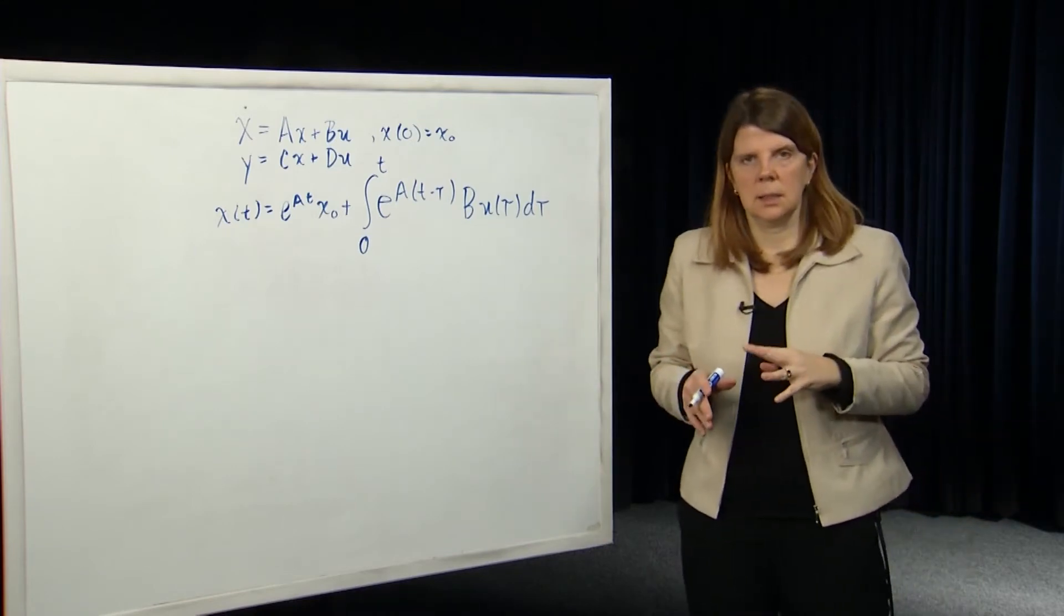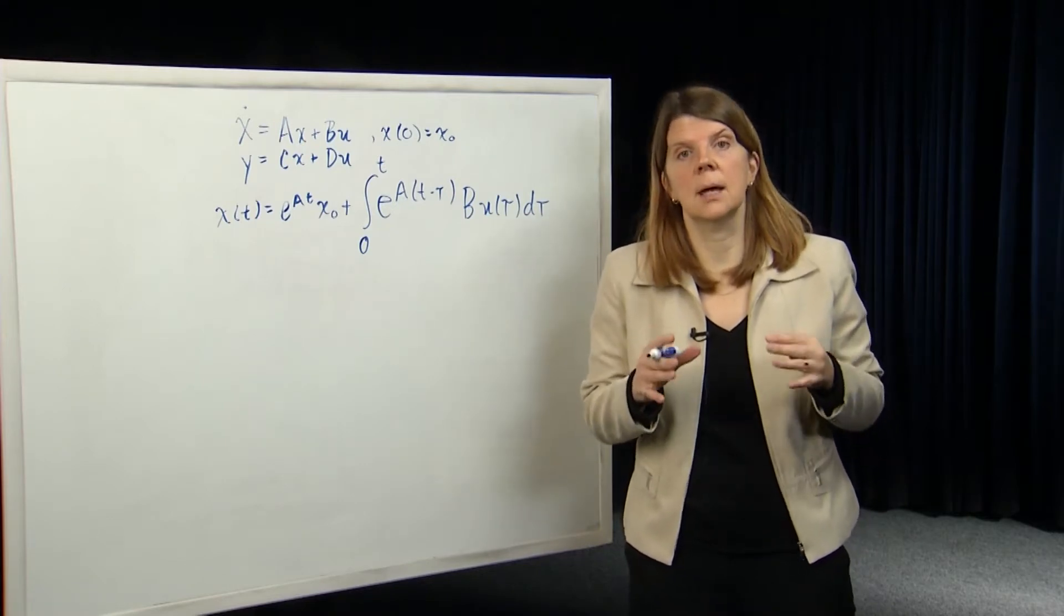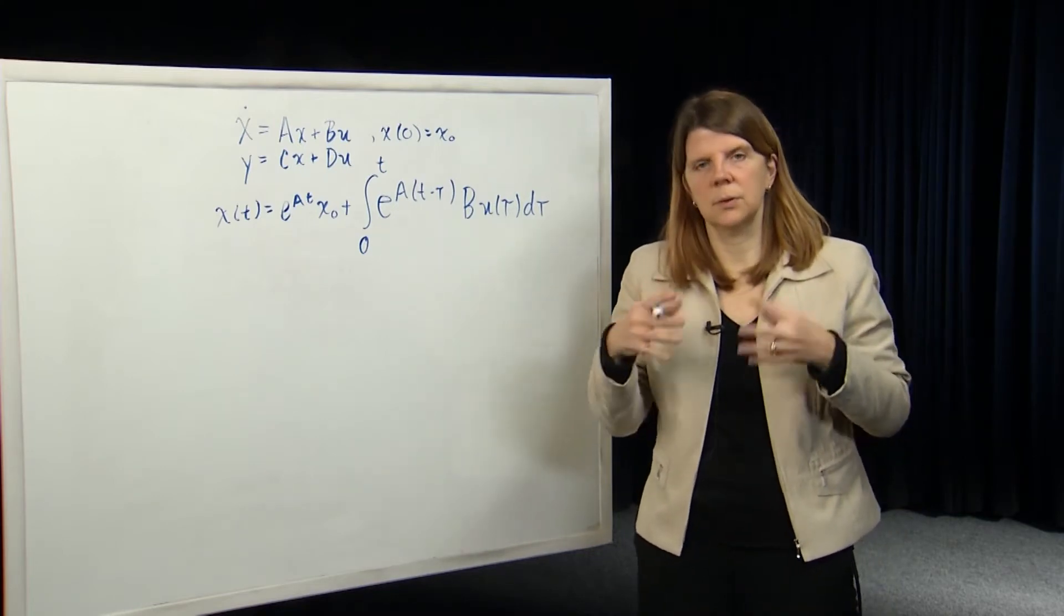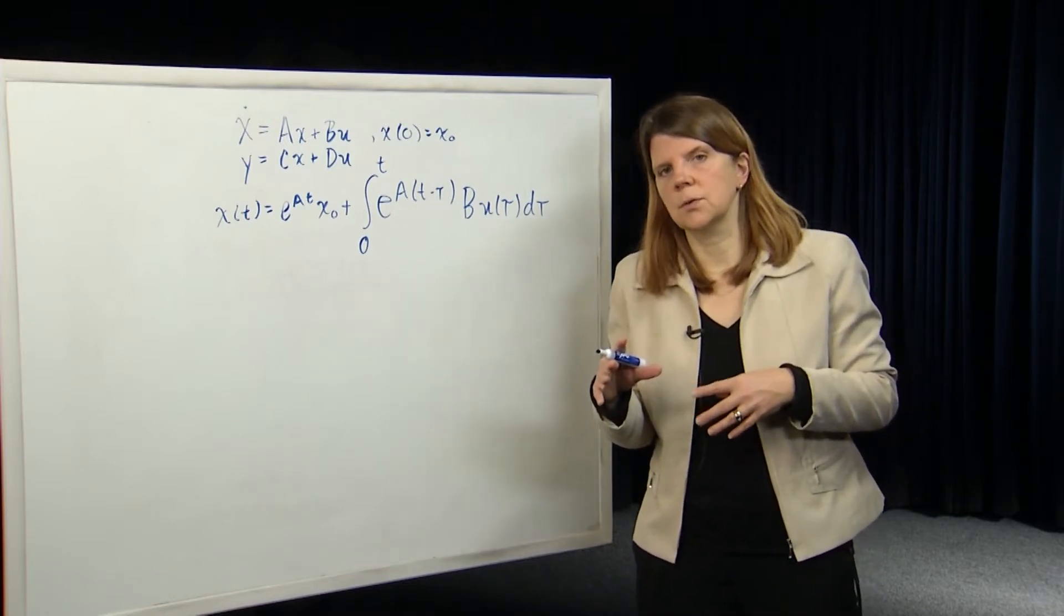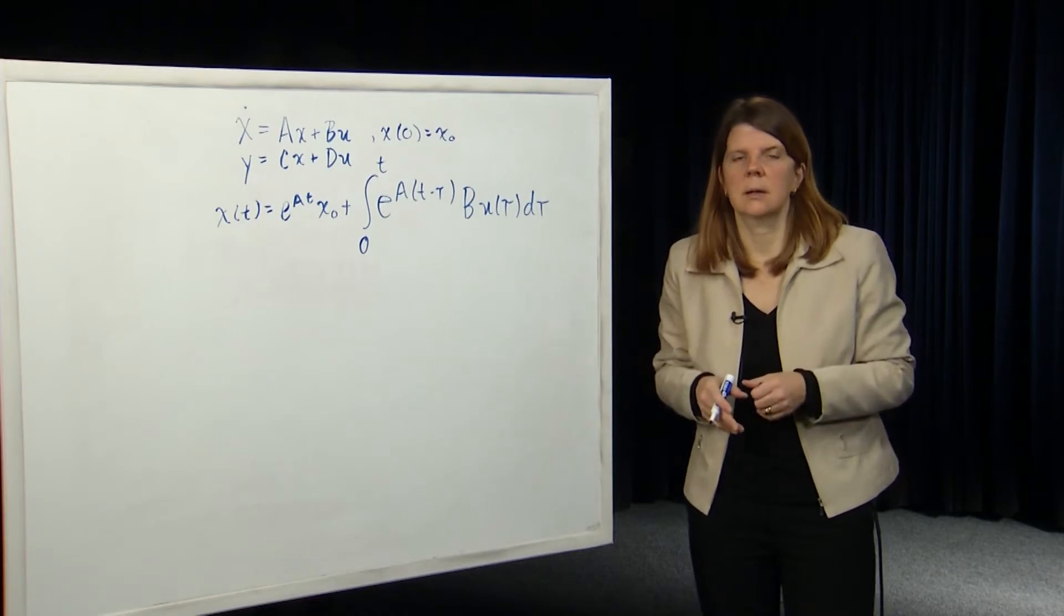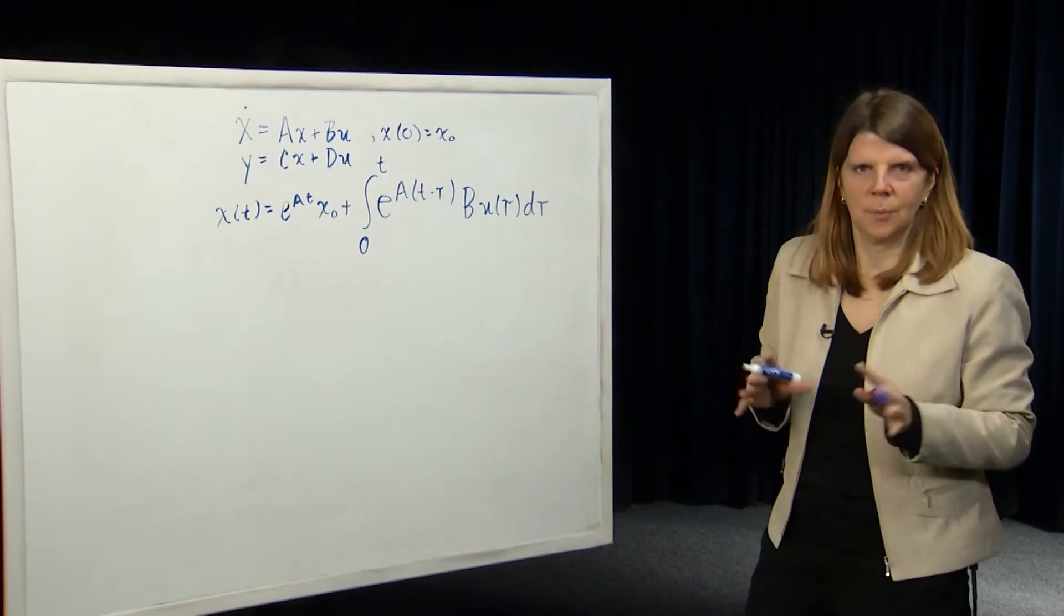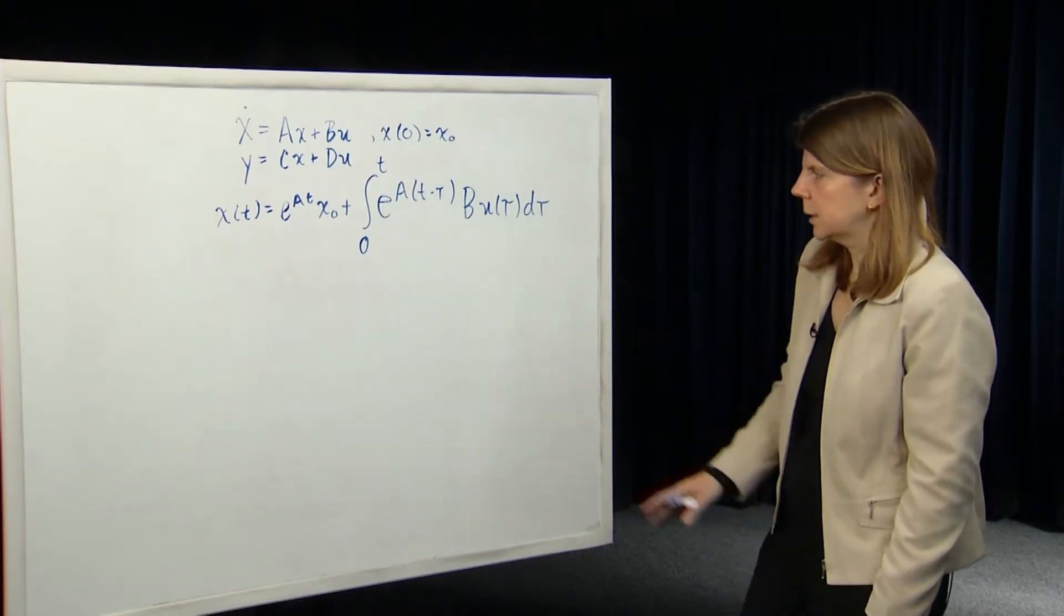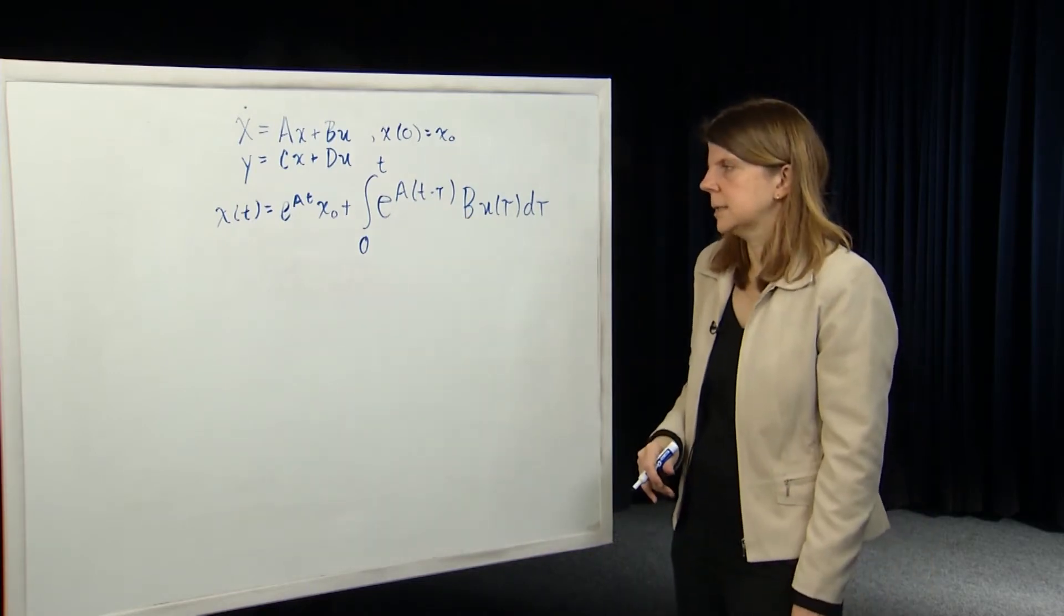So in computing e to the At, our method for doing that is computing the inverse Laplace transform of the matrix sI minus A inverse. So the difficulty in doing that in general is, first of all, you have to compute the inverse of this matrix sI minus A. But then in order to compute the inverse Laplace transform of that matrix, we have to perform some kind of factorization of the characteristic polynomial of the matrix A. And that's the difficult part for matrices that are bigger than dimension three or four, for example. So it would be nice to have a way to simplify the matrix A so we could simplify this calculation of the matrix exponential. And that's the idea here.